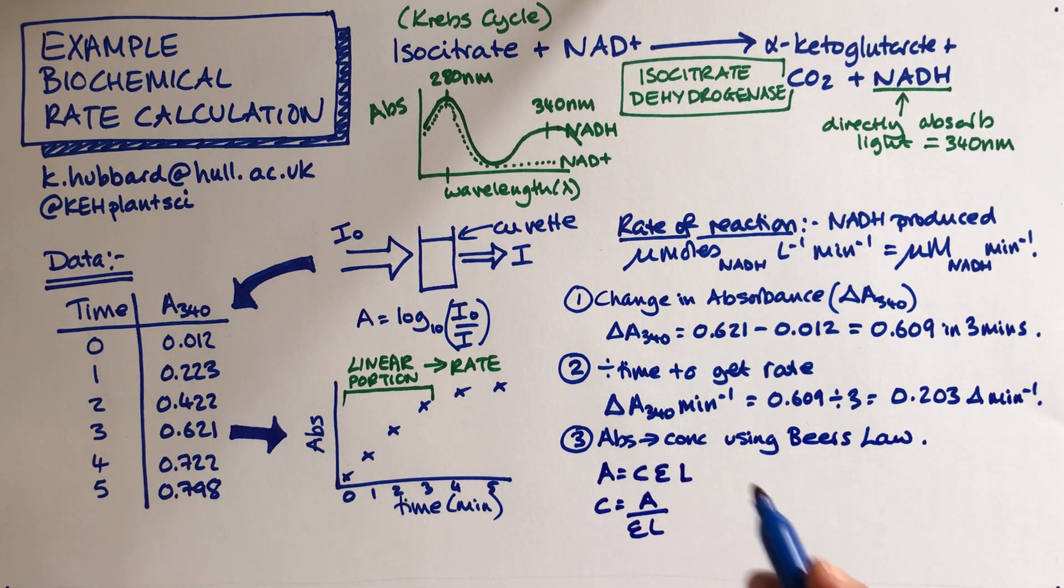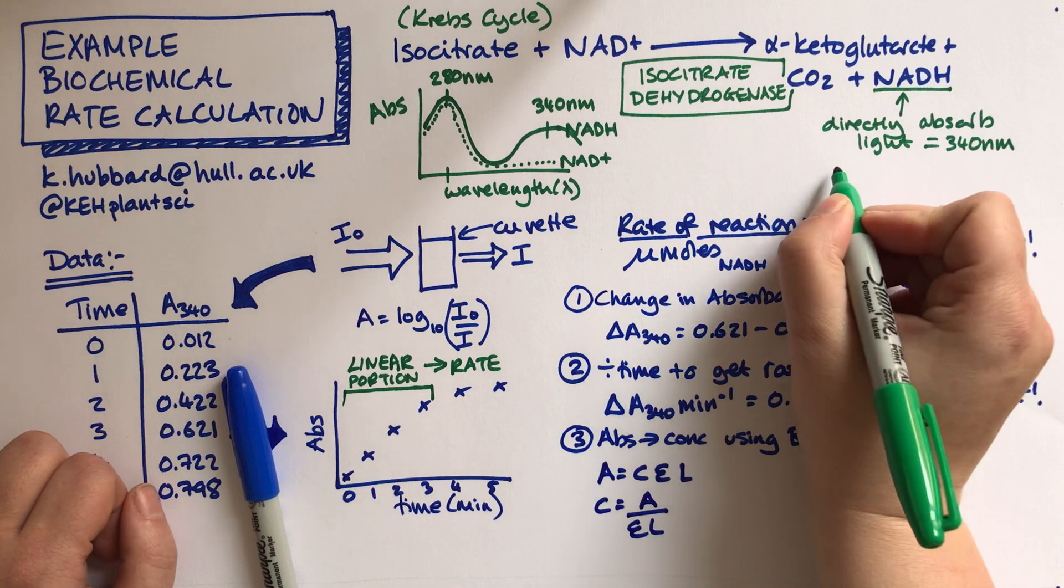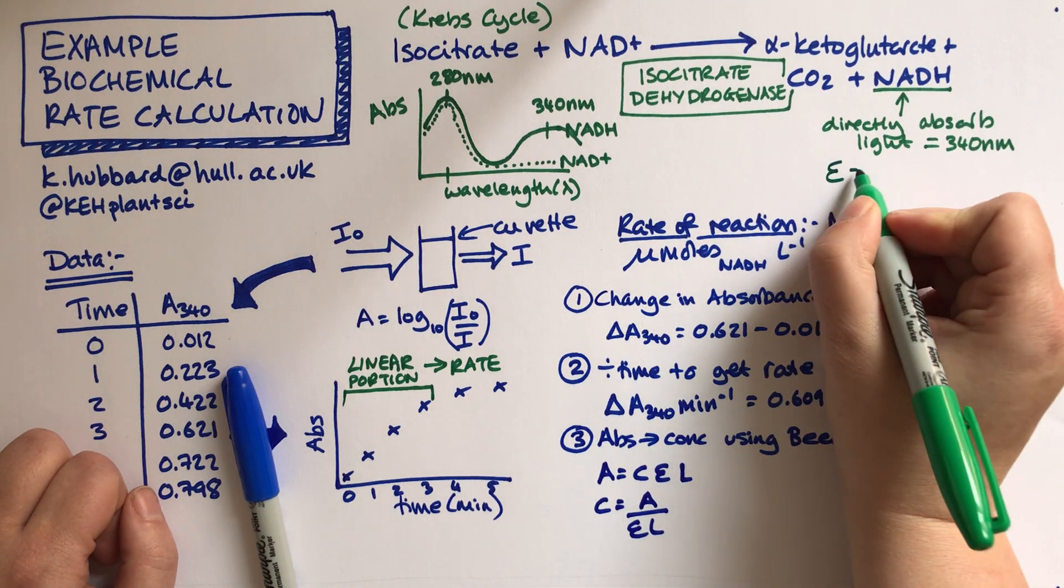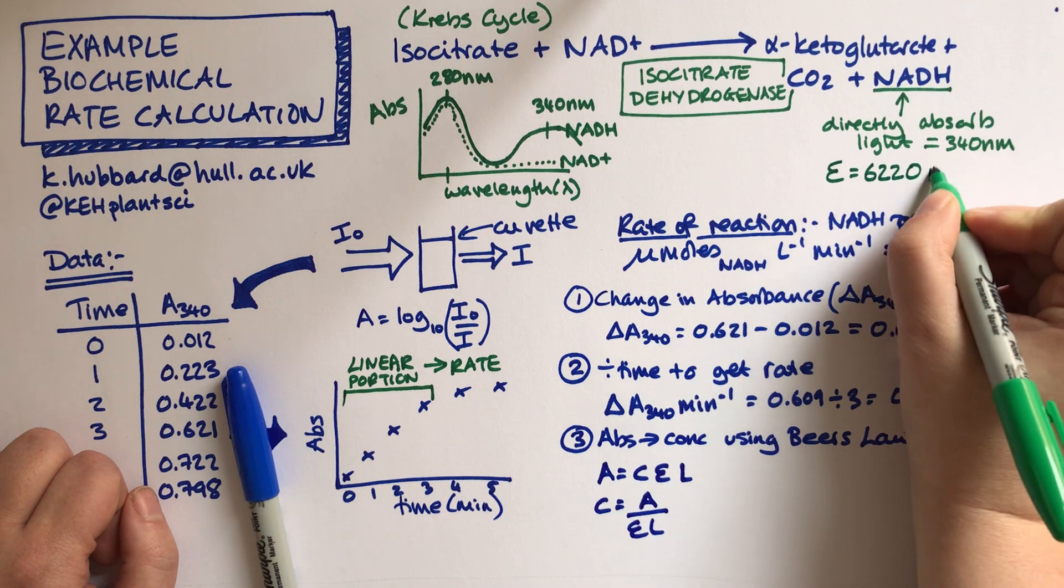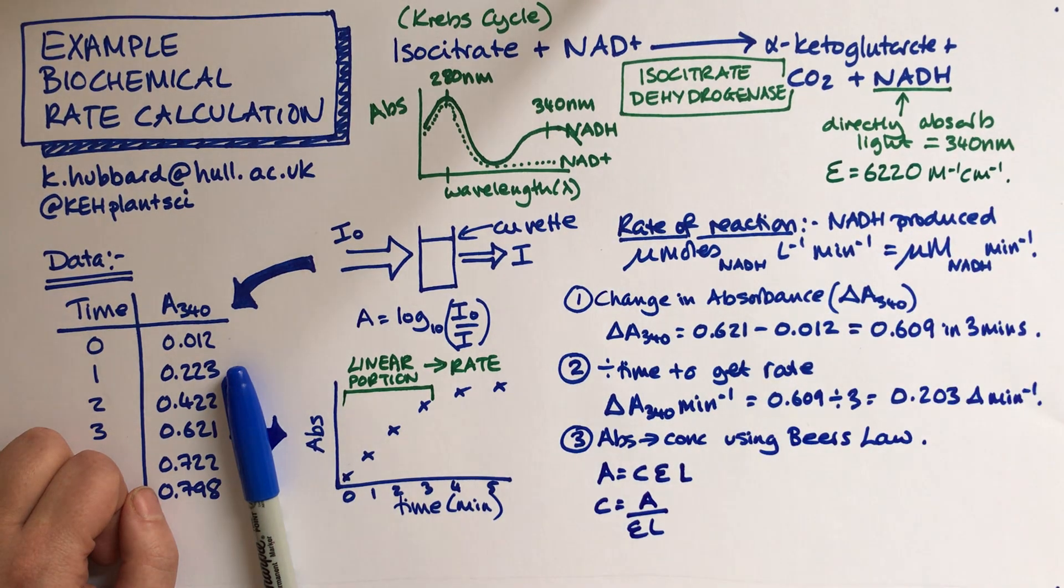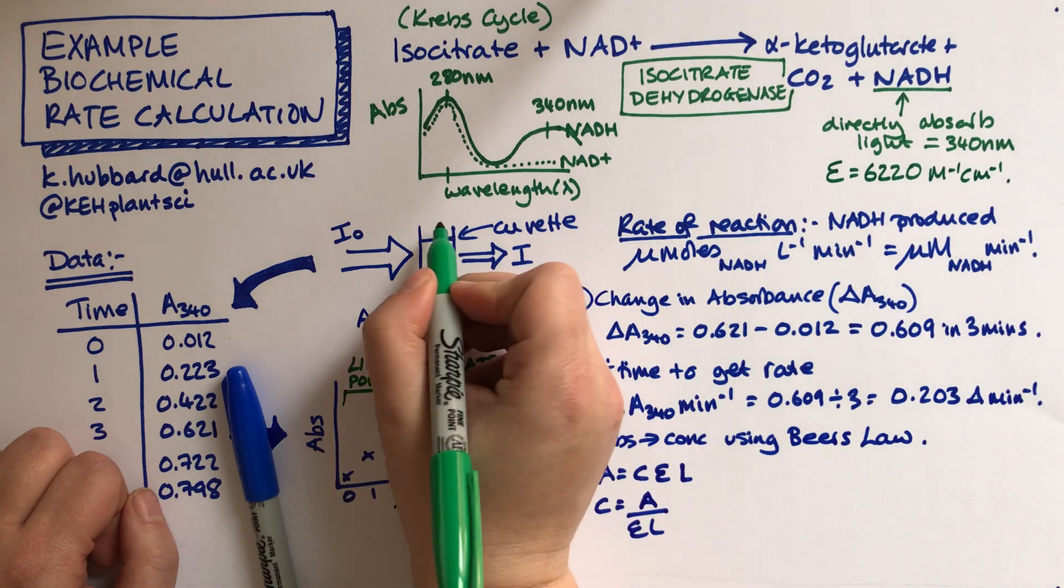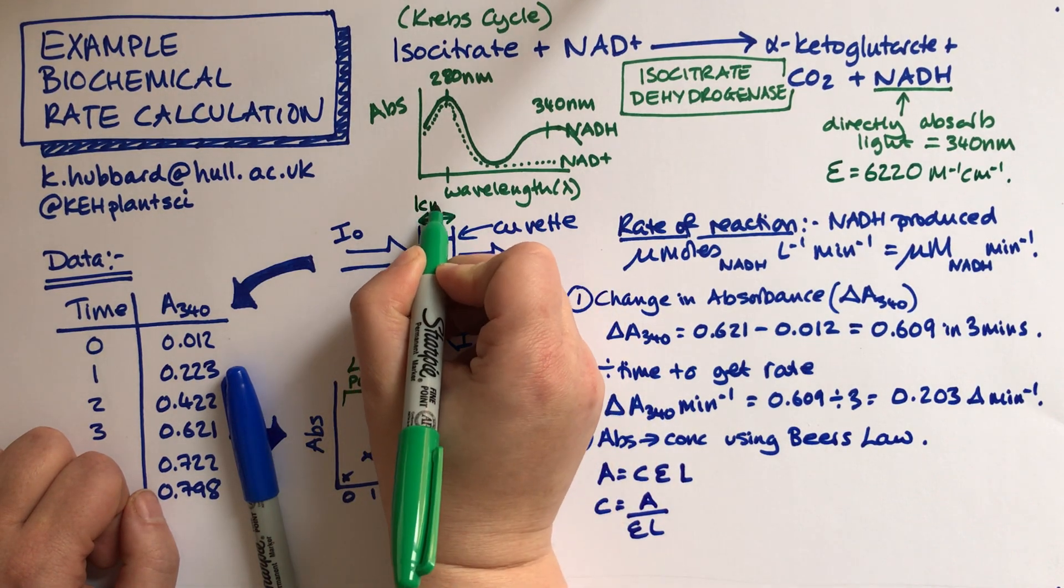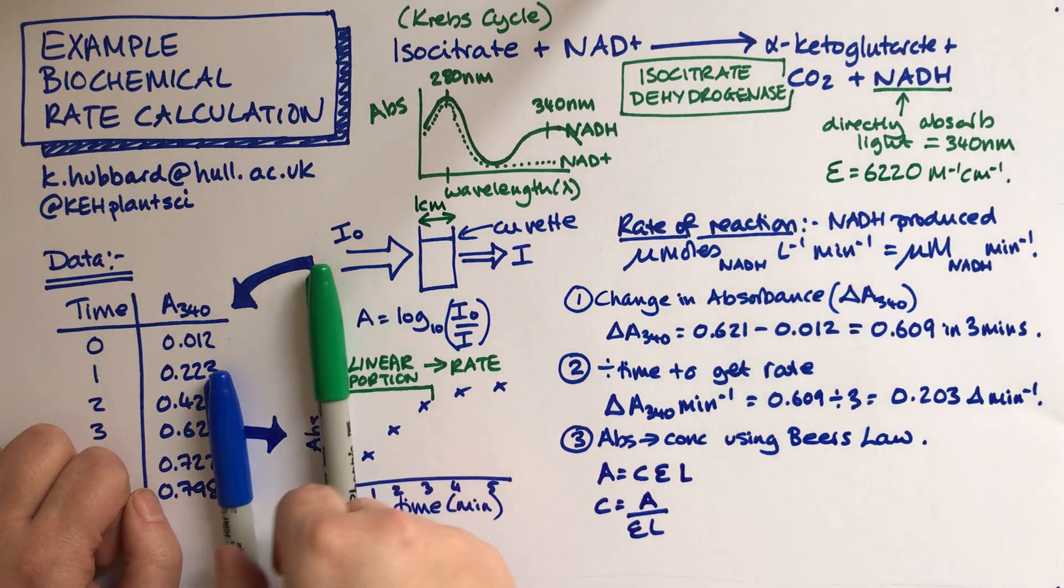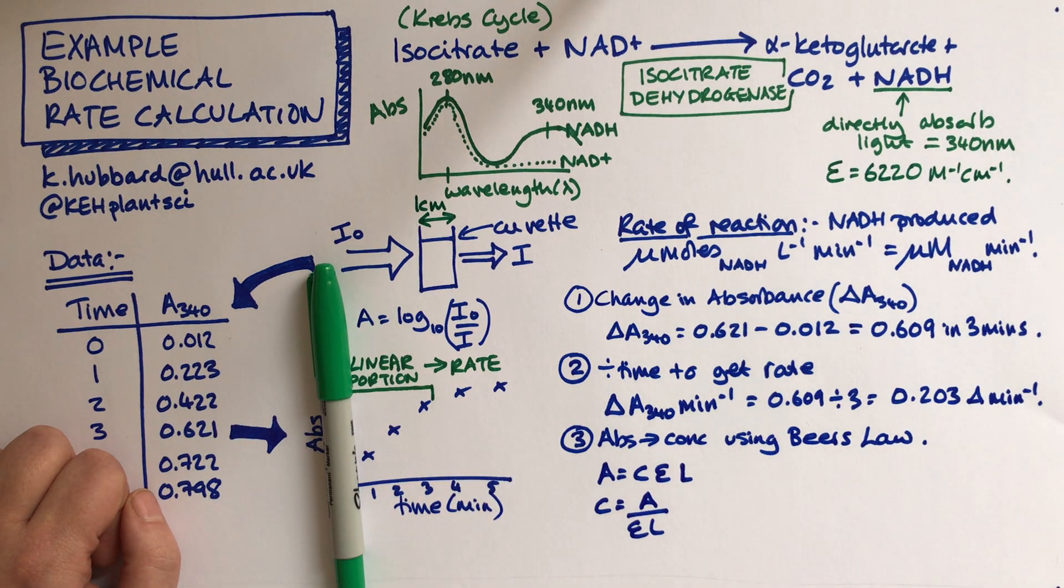So the molar extinction coefficient for NADH is 6220 per mole per centimetre. And our cuvette is almost certainly one centimetre because we nearly always use cuvettes of that. So now we've got all the information that we need.